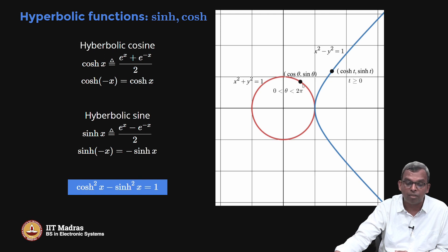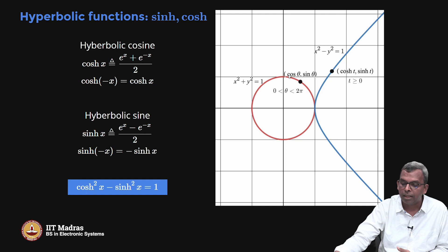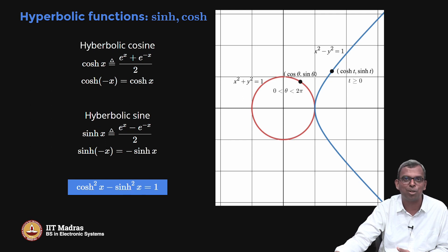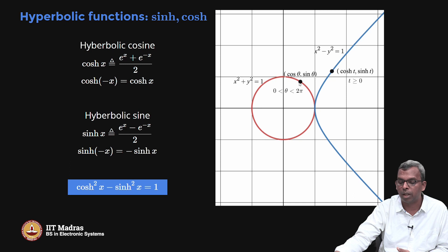You have a circle — x² + y² = 1 is the circle, and the cosine and sine functions are the description of an arbitrary point. At an angle theta, the point is (cos θ, sin θ) for θ between 0 and 2π. That is the parametric description of the circle — instead of defining it as x² + y² = 1, you use polar coordinates x = cos θ, y = sin θ.